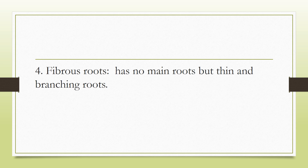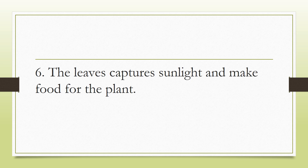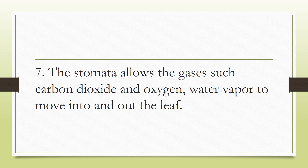Next is fibrous root system: it has no main root but thin, branching roots, so its roots are smaller than the other type. Number five: the stem transports water, minerals, and food to other parts of the plant. Number six: the leaves capture sunlight and make food for the plant. Number seven — the last one: the stomata allows gases such as carbon dioxide, oxygen, and water vapor to move into and out of the leaf.